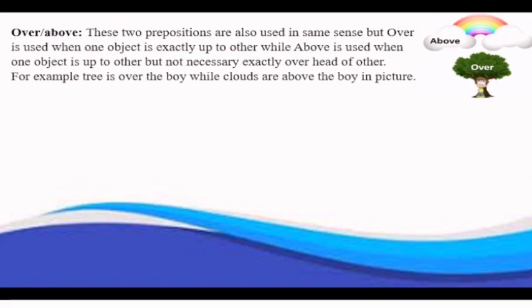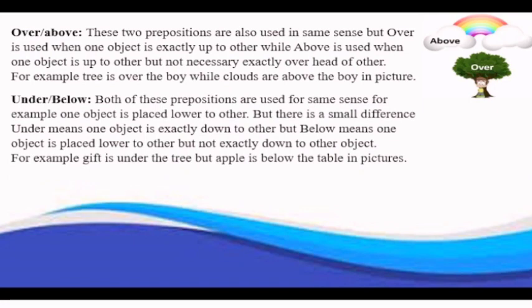Under and below: both of these prepositions are used for same sense, for example, one object is placed lower to another. But there is a small difference. Under means one object is exactly beneath to another object, but below means one object is placed lower to other but not exactly beneath to other object. For example, gift is under the tree, but apple is below the table, in pictures.